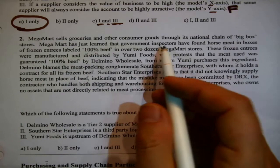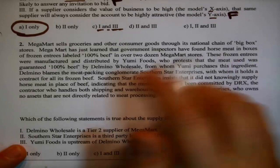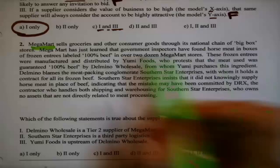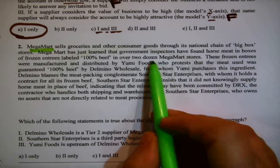This second question is the only one in the set that doesn't have to do with either the supplier positioning or preferencing model. It has to do with supply chain terminology. Let's look at it.